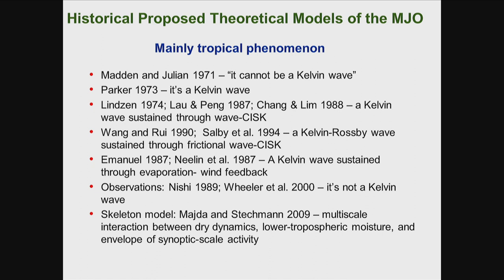But two years later, 1973, Parker said it's a Kelvin wave because it's very similar in wavenumber and propagation. And later, Lindzen, Lao and Pen, and Chang and Lim looked at the theory for MJO generation. They said it's a Kelvin wave sustained through a wave and the conditional instability of second kind — the CISK mechanism. Wang and Zui and Salby et al. modified that theory and said it's a Kelvin wave sustained through a frictional wave-CISK mechanism.